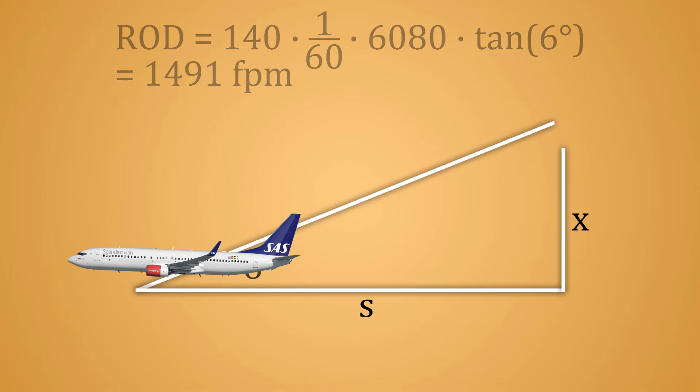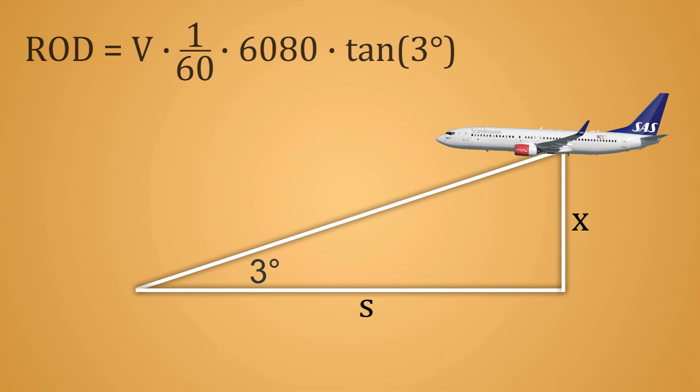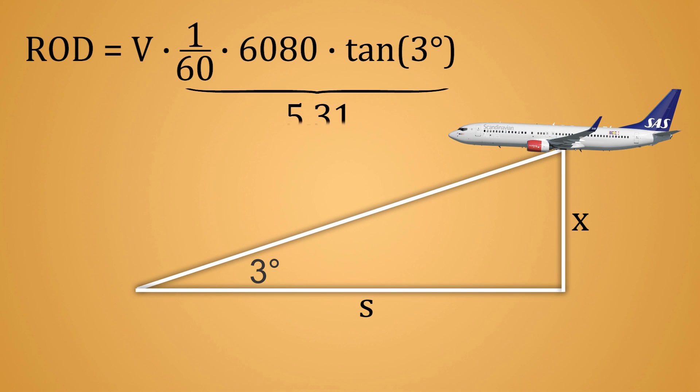If you don't have a scientific calculator nearby, for a glide path of three degrees, multiply your approach speed by 5.31 to get the rate of descent. Alternatively, you can just multiply it by five to get an approximate result.